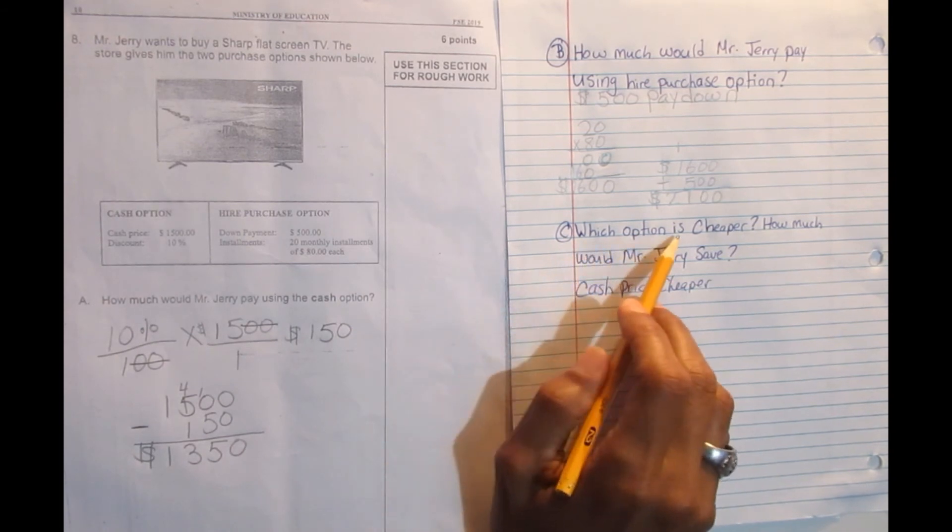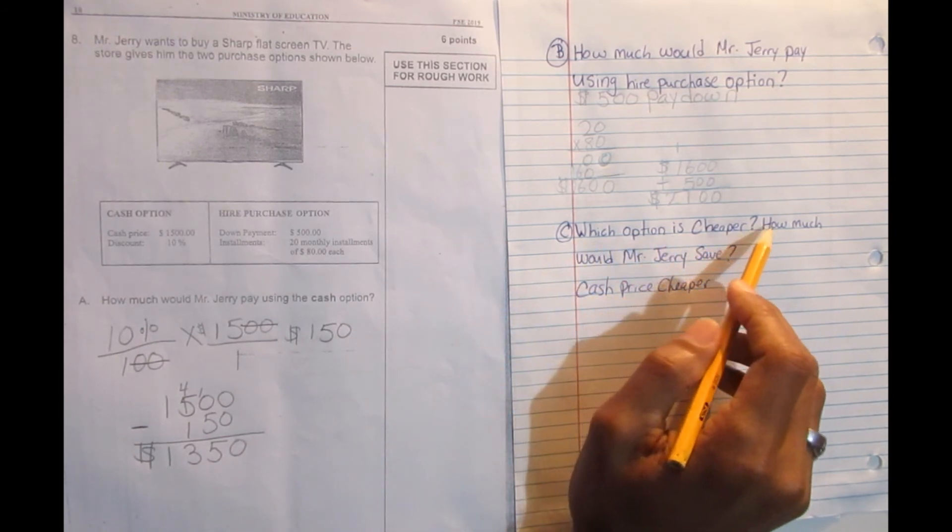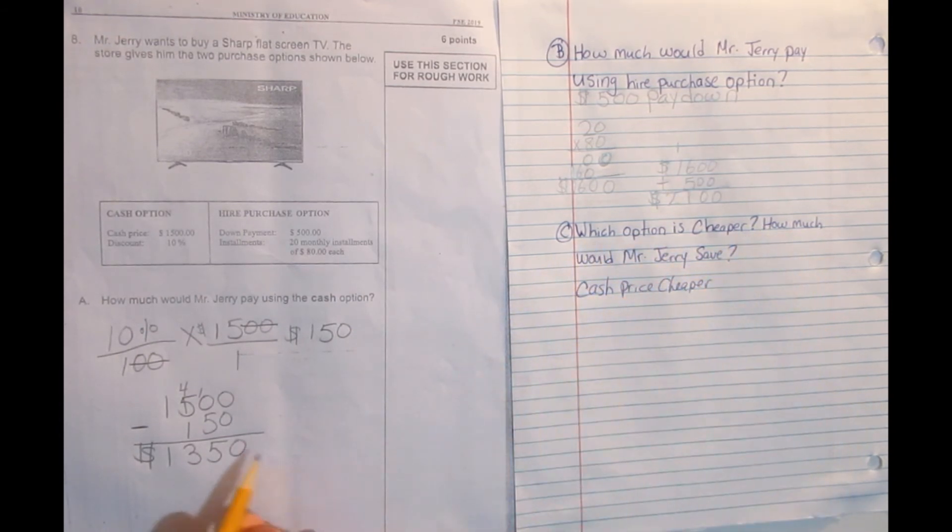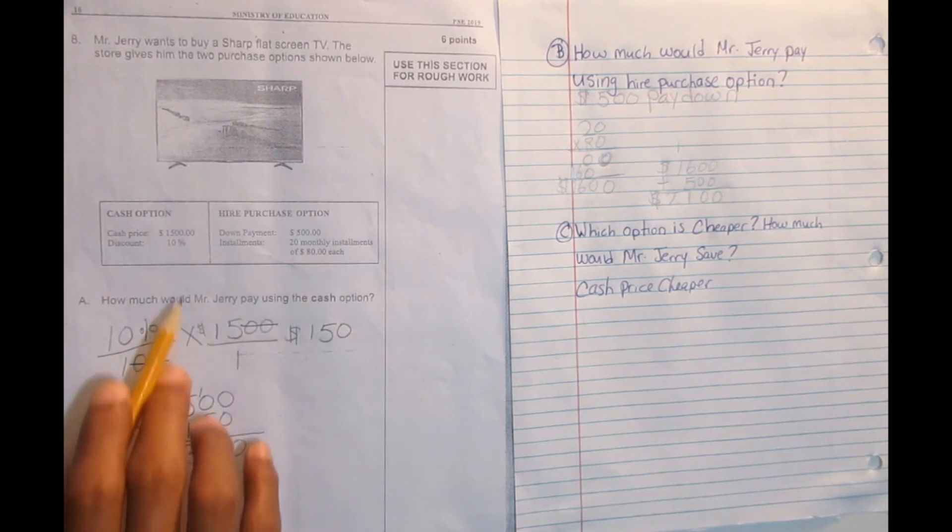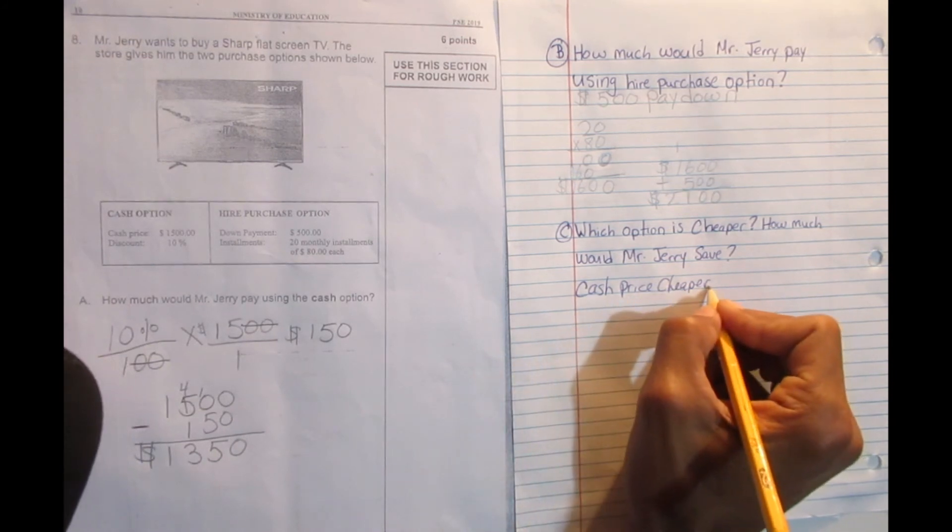And C asks, which option is cheaper and by how much? So as we can see, which one is cheaper? It's the cash price. Because if you buy cash, you would have just paid $1,350 when you minus a 10% discount. So the cash price is cheaper.